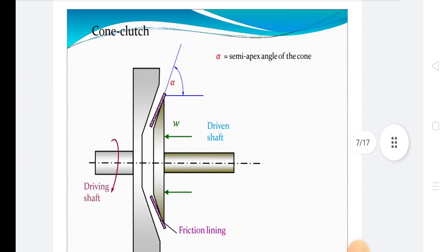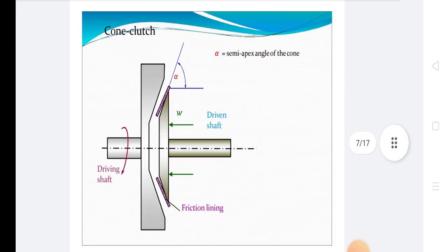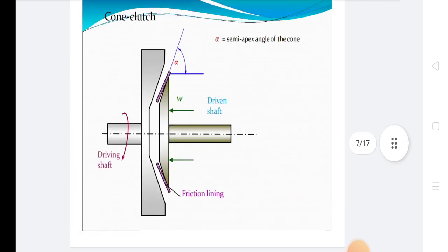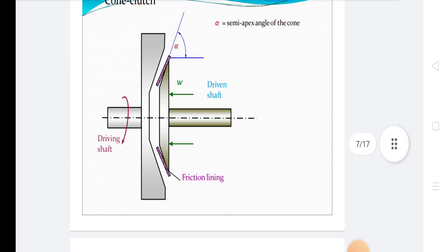In cone clutch design, all factors are considered: driven shaft, driving shaft, and friction lining. In friction clutches, there are three types: plate or disc clutches, cone clutches, and centrifugal clutches. In plate clutches, there are two types: single plate and multiple plate clutches. Today we discuss about cone clutches.